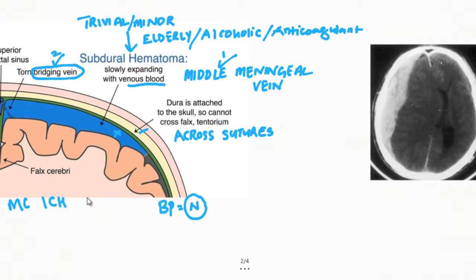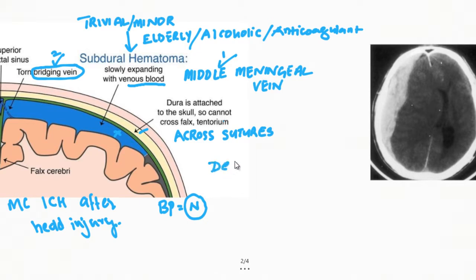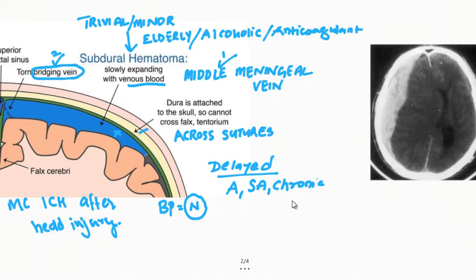Subdural hematoma is the most common intracranial hemorrhage after head injury, because even minor trauma can cause it. While epidural hematoma is more acute in onset, subdural hematoma can present as acute but also has subacute and chronic presentations. There is slow deterioration with decreased consciousness and hemiparesis, and cortical damage is more compared to epidural hematoma.